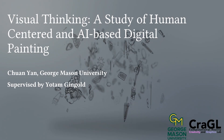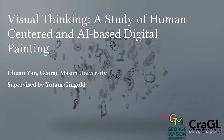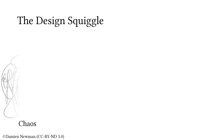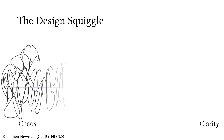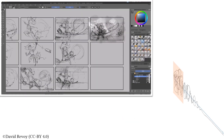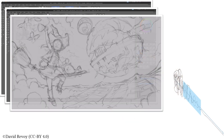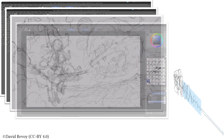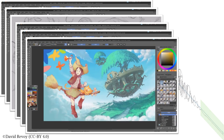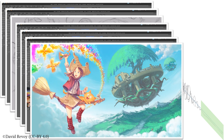Hi, my name is Chuan Yen, and my thesis focuses on human-centered and AI-based digital painting, advised by Yutam Gingold at George Mason University. When humans begin drawing from scratch, their mental model often follows a pattern like the design squiggle — a visual representation of the creative process illustrating the messy, exploratory phases of design that eventually lead to a clear and focused solution. Usually, these processes begin chaotically, involving trial, error, and refinement before arriving at a final polished outcome. The messiness and iteration are natural and essential parts of the design process. However, this process has not yet been fully understood or replicated by current digital painting tools.